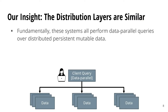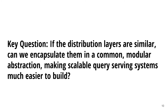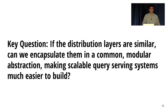What we realized from looking more into these distribution layers is that they're actually all kind of similar. Fundamentally, every one of these query serving systems performs data parallel queries over distributed, persistent, mutable data. Exactly what the data is and what the queries are varies a lot from system to system, but this pattern holds true for all of them. As a result, the specific features and guarantees these systems expect from their distribution layers are similar across all systems.